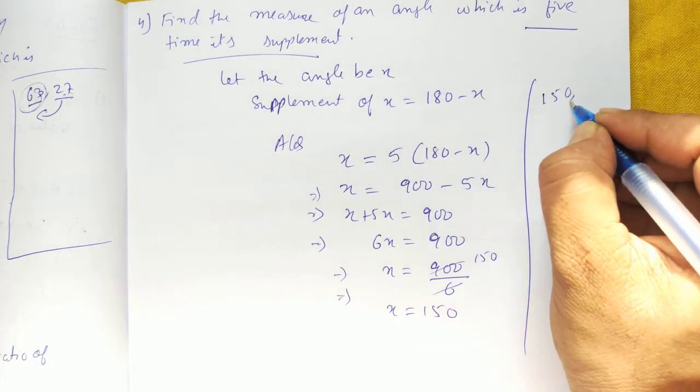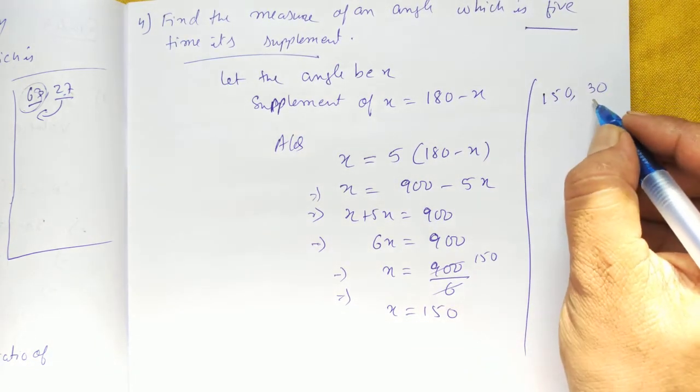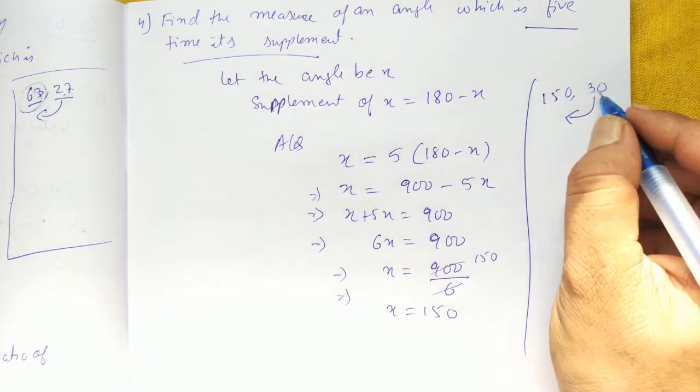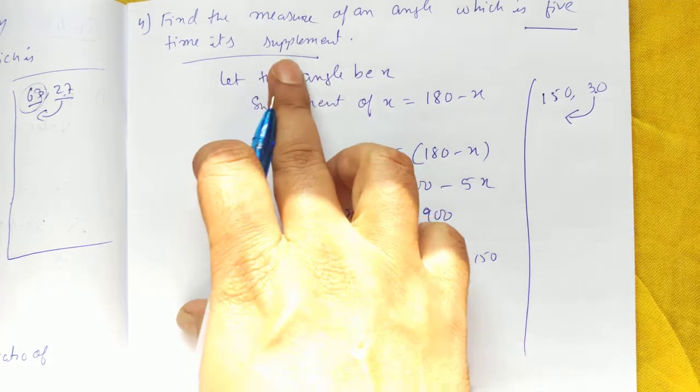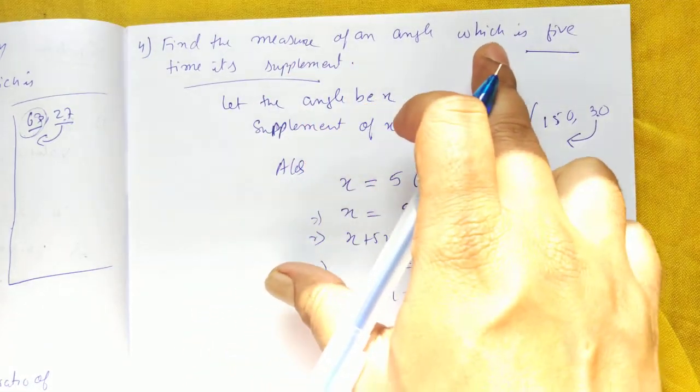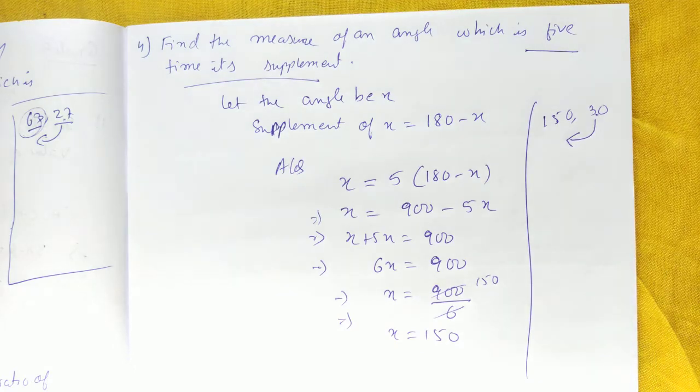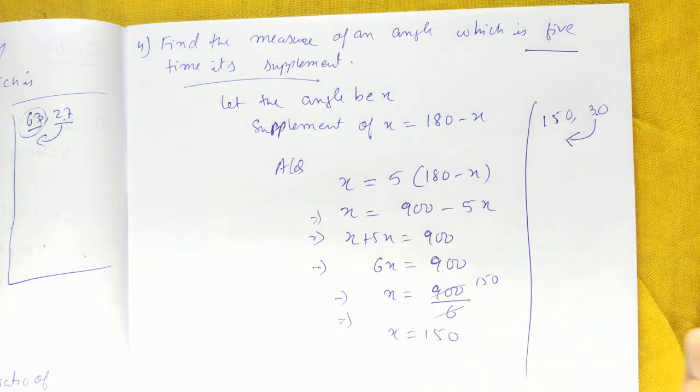Supplement of 150 is 30. Now if you see, 150 is 5 times 30. That's why they are saying find the measure of an angle which is 5 times its supplement. So the answer is correct. 150 is 5 times the supplement that is 30 degrees. You can pause the video to write the solution. Thank you.